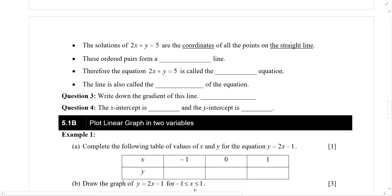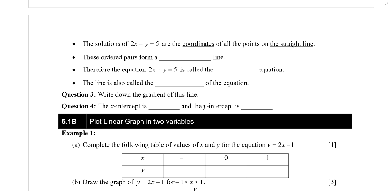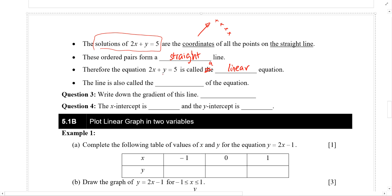So another way of putting it on the next page. The solutions of 2x plus y equals to 5, they are actually the coordinates of all the points on the straight line. So this refers to all the little crosses, all the positions of the little crosses. And these ordered pairs, they form a straight line. Therefore, the equation, this equation, is called a linear equation, and the line is known as the solution.